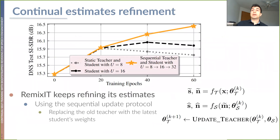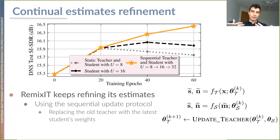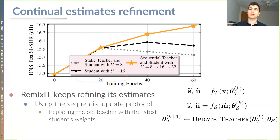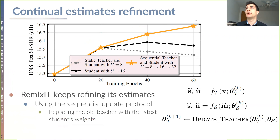Another interesting aspect is that by using this kind of sequential teacher update, we can make the student gradually deeper and more expressive. We see that we can continue to learn better instead of having a static teacher and student with a static number of processing blocks. Replacing the old teacher with the later student weights is really important to obtain better results in a completely self-supervised training setting.